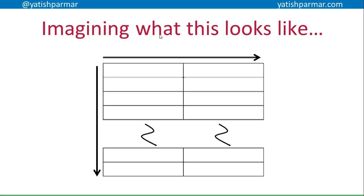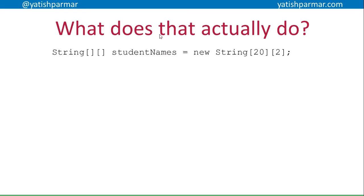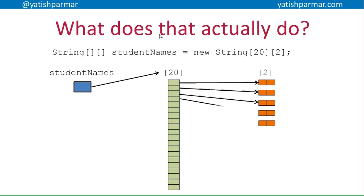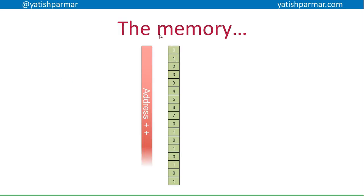We've got 20 rows going down and two columns going across, so I can store the first name in the first column and the last name in the second column. What does that really do in memory? My `studentNames` identifier in my program is pointing at a memory location that has 20 rows, but each of those actually points at individual sub-arrays somewhere else in memory.